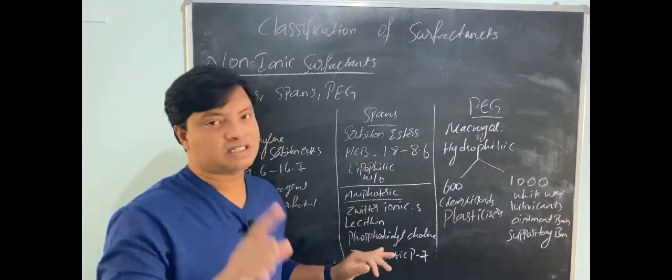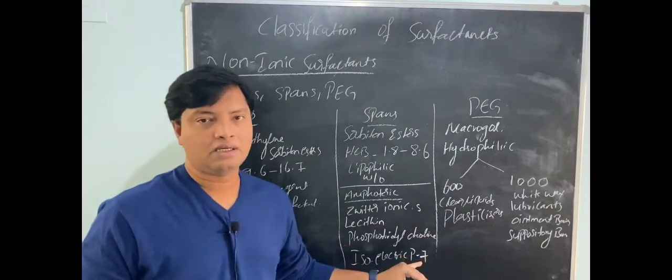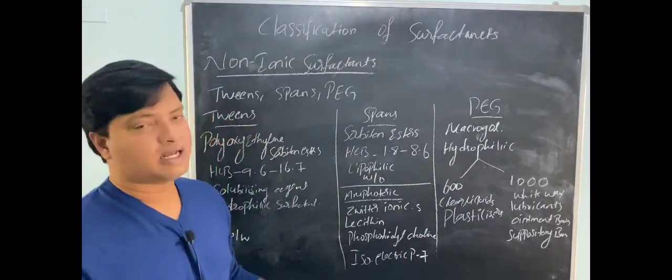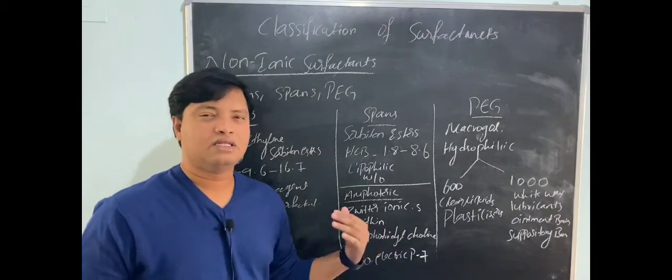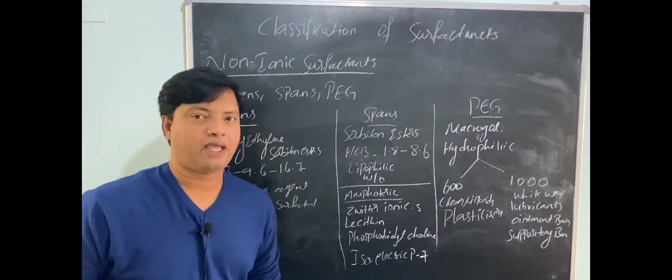Then we have amphoteric or zwitterion type ionic surfactants. Examples are lecithin or phosphatidylcholine. Their isoelectric point is 7. They have both charges, positive and negative charges.